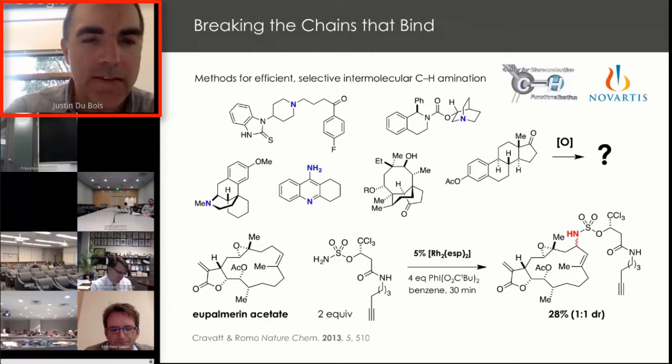The value of being able to oxidize these kinds of compounds is potentially quite large, and this is best exemplified in the work by Cravatt and Romo, where using a modified version of our reaction conditions, they're able to take natural products and show that in a single step you could incorporate a carbon-nitrogen substituent, and from there make affinity probes and other types of modified natural products which would change the biological activity of these molecules.